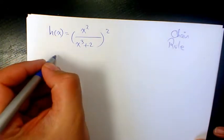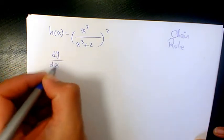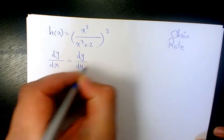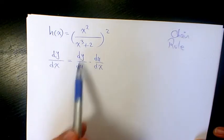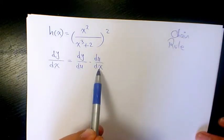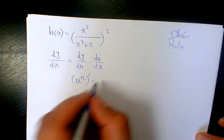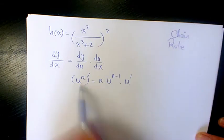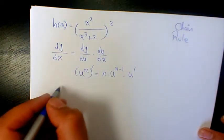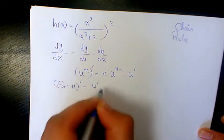Chain rule means that if you want to find the derivative of y with respect to x, where y is a function of u and u is a function of x, we can write it as dy/du times du/dx. For example, if you have u to the power of n, the derivative is n times u to the power of n minus 1, times u prime. When you have sine(u), it's going to be u prime times cosine(u).